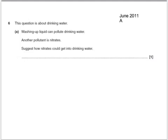Here's a past paper question. This question is about drinking water. Washing up liquid can pollute drinking water, but another pollutant is nitrate. Suggest how these nitrates could get into the drinking water. This would be farmers using fertilizers near rivers and lakes.